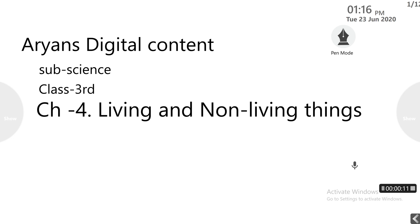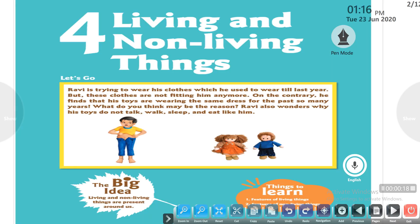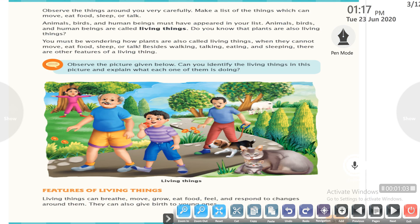Good morning students, today we are going to discuss chapter four: living and non-living things. Ravi is trying to wear his clothes which he used to wear till last year, but these clothes are not fitting him. On the contrary, he finds that his toys are wearing the same dress for the past so many years. Why are the toys still fit but Ravi is not? Because the toys do not talk, walk, sleep and eat like Ravi.